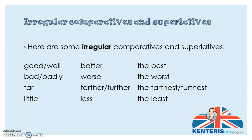As with other grammar rules, we do have some irregular comparatives and superlatives. The adjective 'good' and adverb 'well' become 'better' and 'the best.' 'Bad' and 'badly' become 'worse' and 'the worst.' 'Far' becomes 'farther' or 'further' — the quick tip is to use 'farther' for physical distance and 'further' for more metaphorical distance. Their superlatives are 'the farthest' and 'the furthest.' And 'little' becomes 'less' and 'the least.' You'll want to learn these, as they keep coming up.